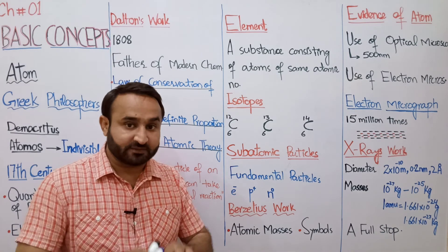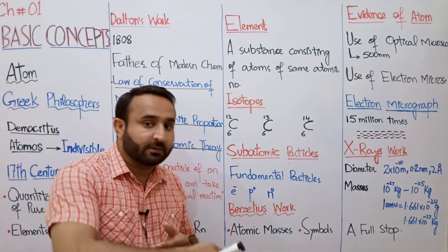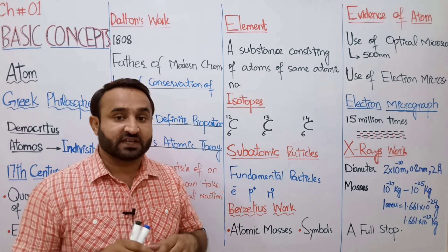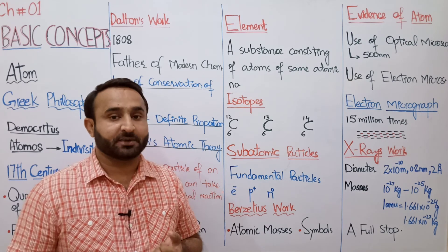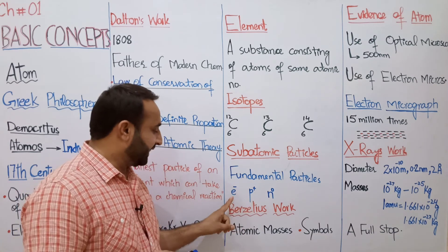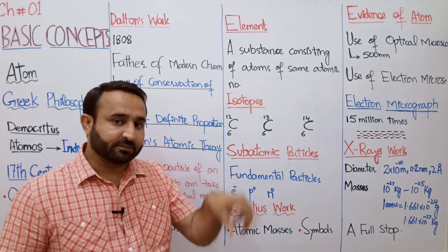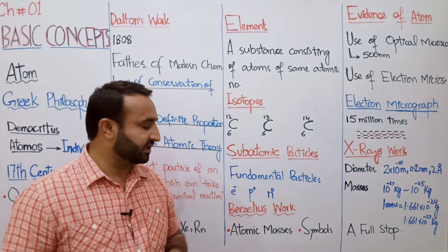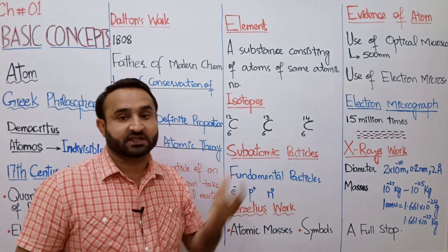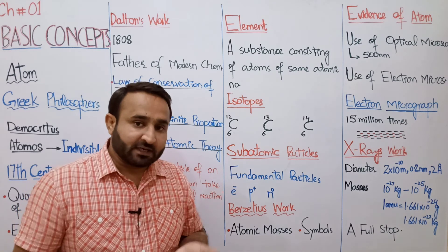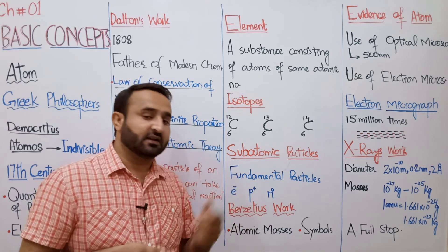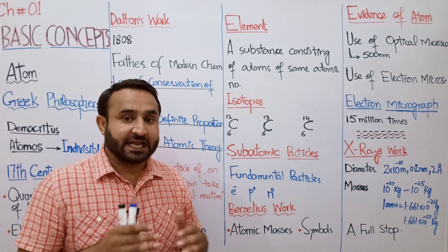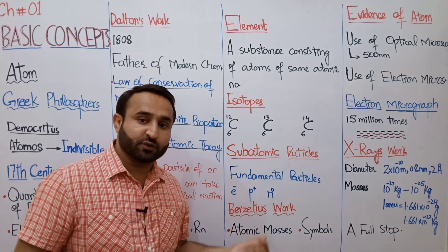Atom کو break کیا جا چکا ہے اور atom میں سو سے زیادہ sub-atomic particles discover ہو چکے ہیں۔ تین fundamental sub-atomic particles ہیں: electron، proton، اور neutron۔ ان کے علاوہ hypron، boson، neutrino، anti-neutrino وغیرہ بھی ہیں۔ Electron پر negative charge ہوتا ہے اور یہ nucleus کے گرد circular path (shells) میں revolve کرتا ہے۔ Proton پر positive charge ہے اور یہ nucleus کے اندر ہوتا ہے۔ Neutron neutral ہوتا ہے اور یہ بھی nucleus کے اندر ہوتا ہے۔ انہیں fundamental particles اس لیے کہتے ہیں کہ chemistry کے تمام concepts اور laws انہی تین particles کی بنیاد پر سمجھے جا سکتے ہیں۔